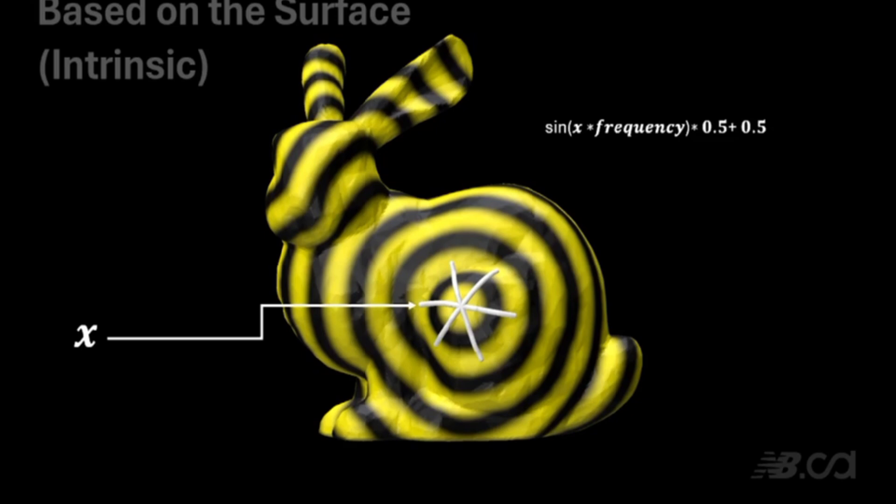In the intrinsic one, I chose to use the geodesic distance from an arbitrary point on the mesh to every vertex. Instead, you get this sort of radiating pattern. But notably, this is the only thing that's changed. It's exactly the same formula, exactly the same process. It's just which data we use.